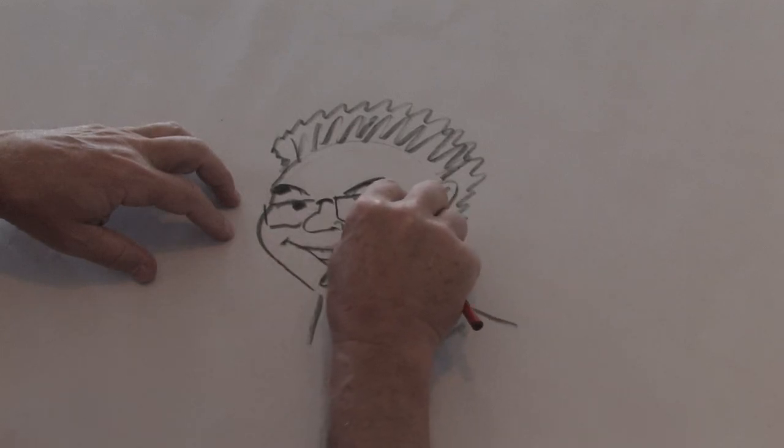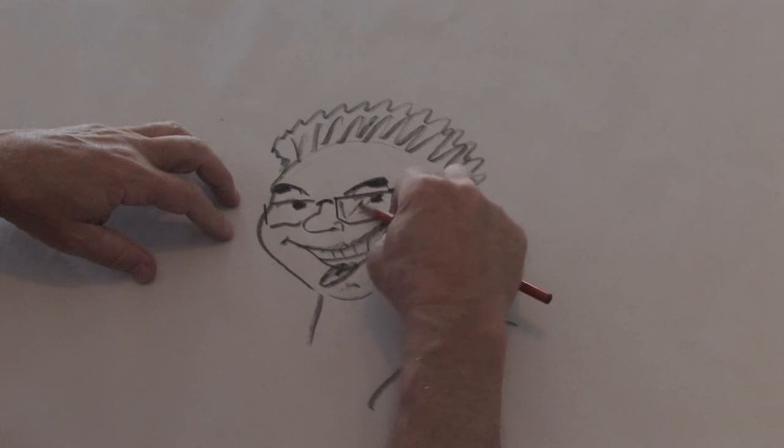And then the frame of the glasses will go right back to the back of the ear. We can just put a couple of little lines to get a little reflection off the glasses.